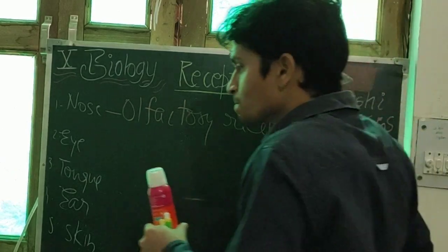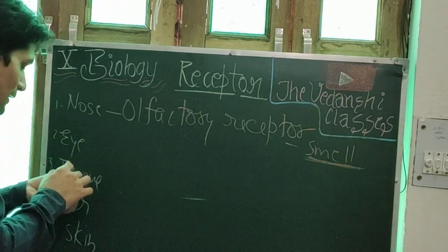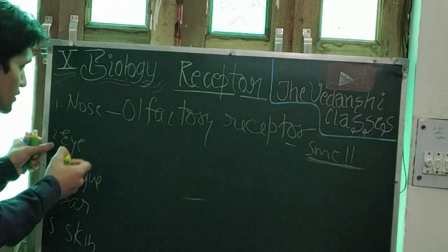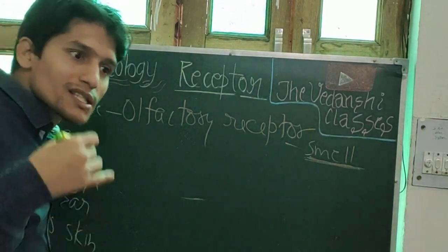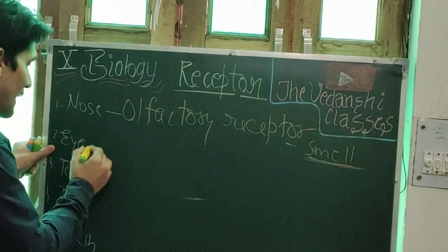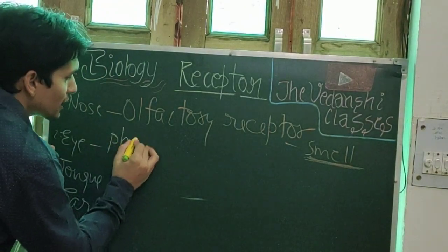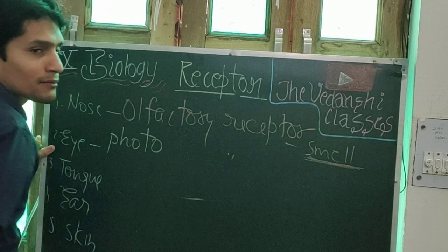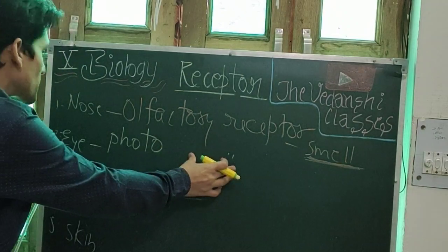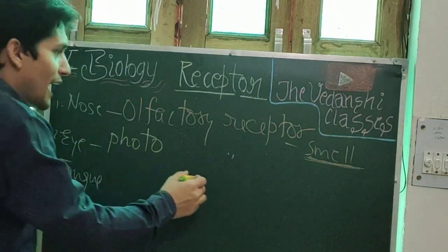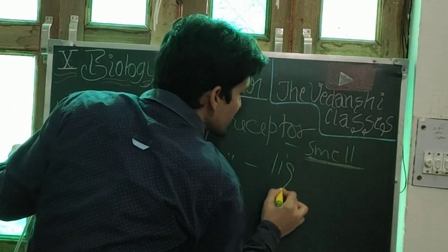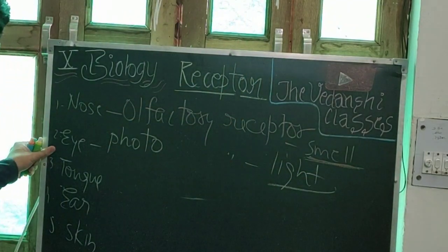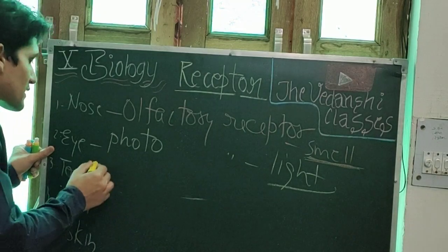For the eyes, we see light. The word for light is photo, so these are called photoreceptors. Photoreceptors are found in the eyes and receive the sense of light. Then we perceive what that light is.